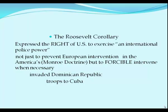Roosevelt's interventionist foreign policy became known as the Roosevelt Corollary to the Monroe Doctrine, expressing the right of the United States to exercise an international police power in the Western Hemisphere — not just preventing European intervention as the Monroe Doctrine specified, but forcefully intervening whenever deemed necessary. Fearing that financial instability in the Americas invited European powers to intervene when their investments were threatened, in 1904 Roosevelt invaded the Dominican Republic to ensure repayment of debts, and in 1906 sent troops to Cuba after a disputed election, where they stayed for three years.